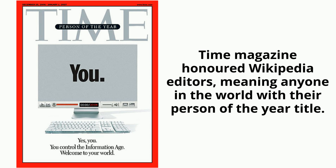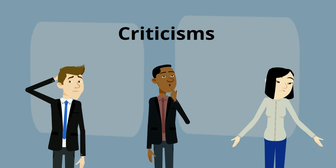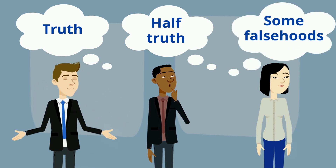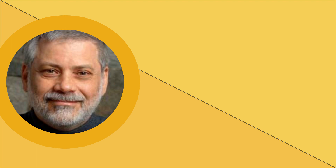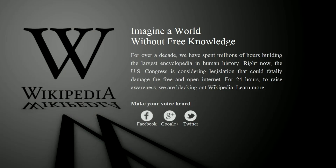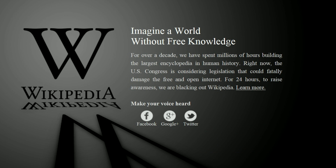Time magazine honoured Wikipedia editors — meaning anyone in the world — with their Person of the Year title. But of course, there have been some serious criticisms. Wikipedia has been criticised for exhibiting systematic bias, for presenting a mixture of truth, half-truth, and some falsehoods. Edwin Black, an American journalist, called Wikipedia 'the tumbling down of world knowledge archived.' Could you really imagine a world without free knowledge? On January 18, 2012, Wikipedia blacked out their site for 24 hours in order to protest against the United States Congress to stop online privacy apps.